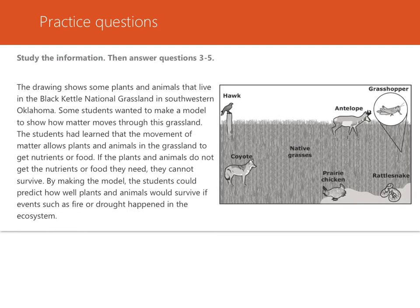Here is a cluster of questions three through five, all about the same information. The drawing shows some plants and animals that live in the Black Kettle National Grassland in southwestern Oklahoma. Students wanted to make a model to show how matter moves through this grassland. The movement of matter allows plants and animals to get nutrients or food; if they don't get the nutrients they need, they cannot survive. By making the model, students could predict how well plants and animals would survive if events such as fire or drought happened in this ecosystem.